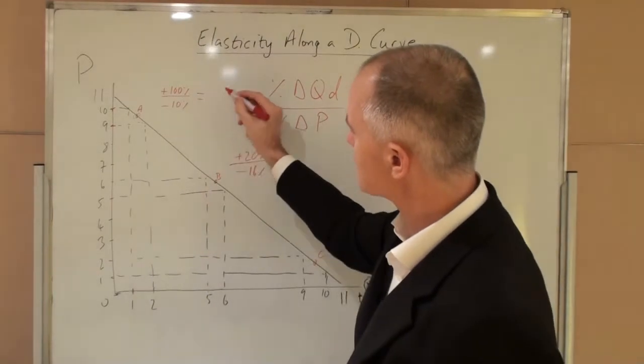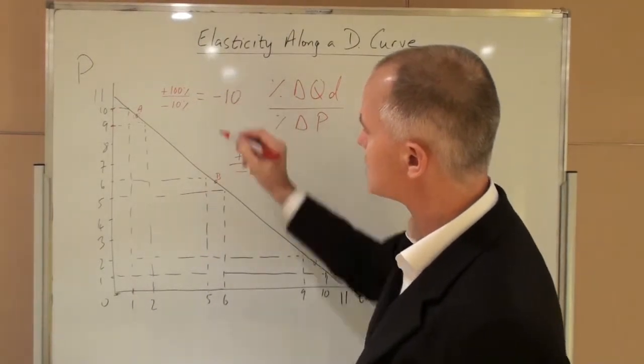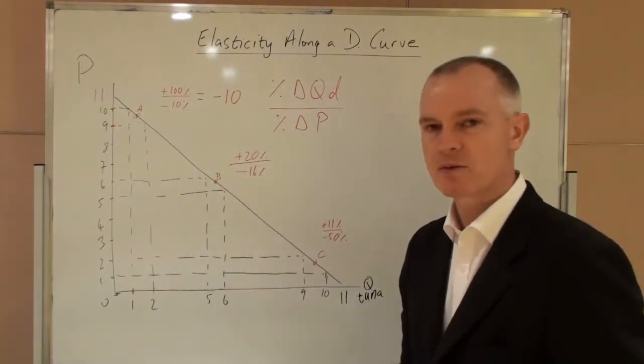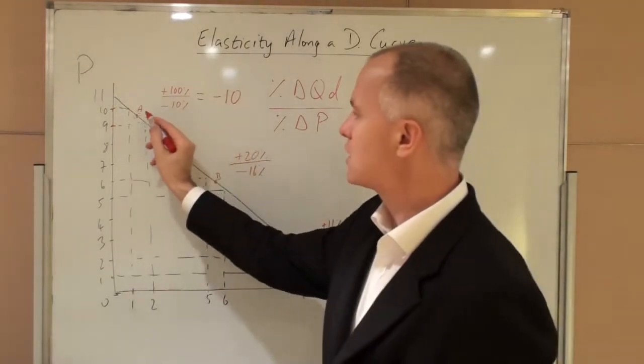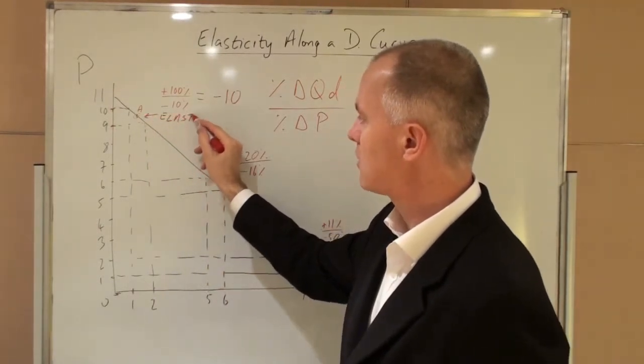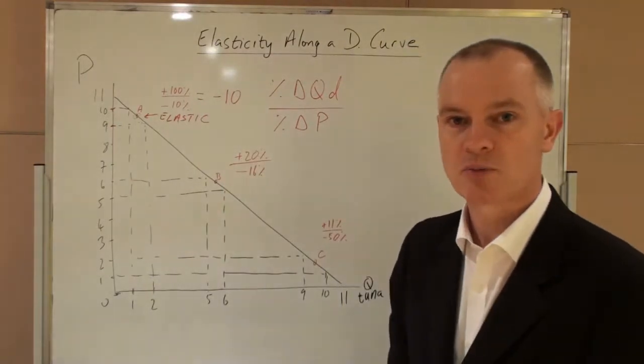This gives us an elasticity value of minus ten, meaning that demand has changed by ten times the amount of the price change. This is very elastic, flexible. Demand has changed a large amount relative to the price.